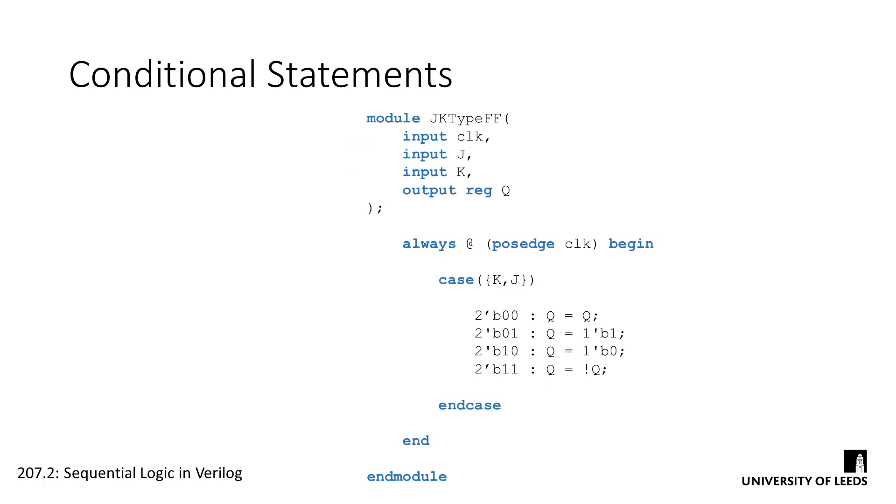The code here shows how we can use a case statement to create a JK flip-flop in Verilog. As mentioned in the previous screencast, the logic elements on the device that we're using only contain D-type flip-flops. Therefore, a JK flip-flop would be synthesized using a feedback loop from the output to the input and some combinational logic in the lookup table.